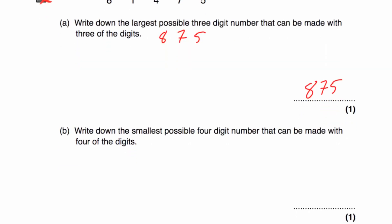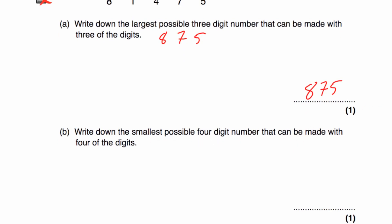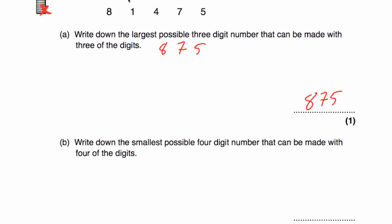Part B says write down the smallest possible four-digit number that can be made using four of the digits. So we're going to use 1, 4, 7, and 5 — not the 8, because it's the largest digit. We want to make the smallest possible number, so we're going to choose 1,457: putting the smallest one at the front, the next smallest in the hundreds, the next in the tens, and the largest of the four digits in the ones.